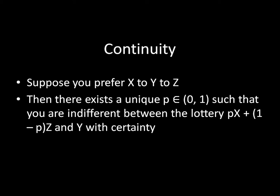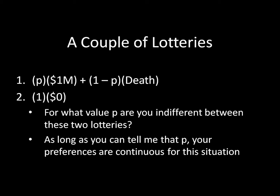To deconstruct that: x is your favorite outcome and z is your least favorite outcome; y is the middle outcome. What continuity says is that we can find a probability distribution that sometimes gives you your best outcome and sometimes gives you your worst outcome that is essentially equivalent to receiving your middle outcome with certainty. As long as you were able to tell me what your p was, your preferences are continuous for this particular situation. Because a million dollars is your favorite outcome, dying a painful death is your least favorite outcome, and winning zero dollars is your middle outcome — so as long as you can tell me some unique value p that makes you indifferent between these two, then your preferences are continuous.